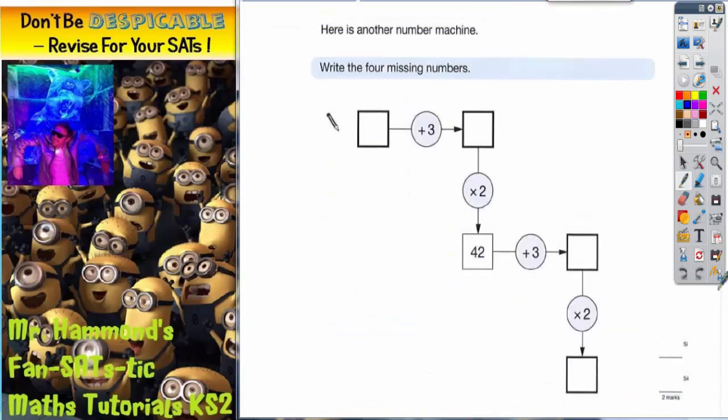Now we move on to the one we've actually got to work out. Here is another number machine - write the four missing numbers. We don't know what the mystery number is in this box or this one, but we do know the number in this box is 42. So it's going to make more sense to start here.